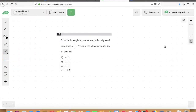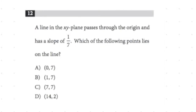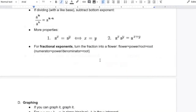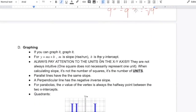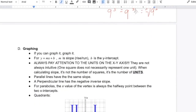Let's keep rolling. Question number 12. Go ahead, Hannah, read this for me please. A line in the XY plane passes through the origin and has a slope of one over seven. Which of the following points lies on it? On the rules for math, I've got a rule: if you can graph it, just graph it. So let's graph it.